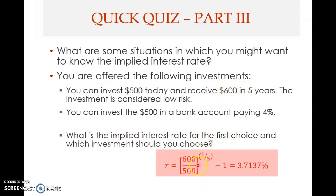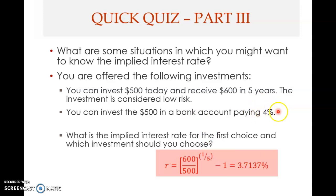You can solve as follows: take FV divided by PV, which is 600 divided by 500, raised to the power of one-fifth, then minus one. You get 3.7137%. Note this is the implied interest rate. That means if you invest $500 now and receive $600 after five years, you earn only 3.7137% per year, which is lower than the 4% offered by the bank account.